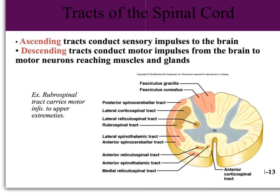There are two types of tracts in the cord: the ascending tracts carry sensory information to the brain so the brain knows what's going on with the body and the outside world, and the descending tracts carry information from the brain to tell the body what to do — going out to our muscles and glands. As an example, we have the rubrospinal tract, which carries information on descending tracts out to the muscles in our upper extremities to get those muscles to contract.